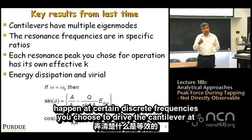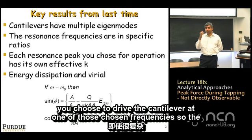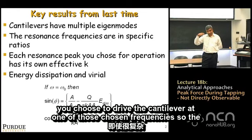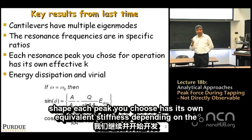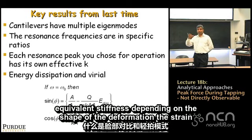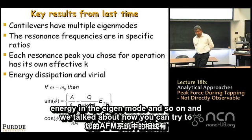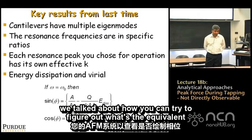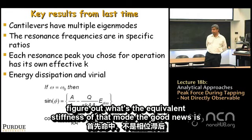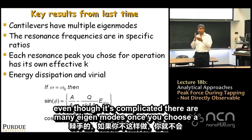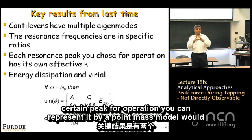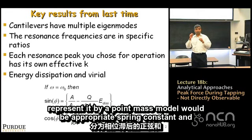You choose to drive the cantilever at one of those discrete frequencies, and the cantilever vibrates in a characteristic shape. Each peak you choose has its own equivalent stiffness depending on the shape of the deformation, the strain energy, and the eigenmode. Even though it's complicated, once you choose a certain peak for operation, you can represent it by a point-mass model with the appropriate spring constant.